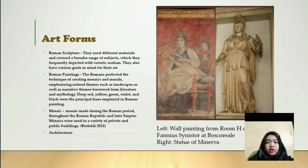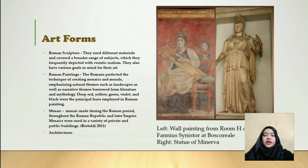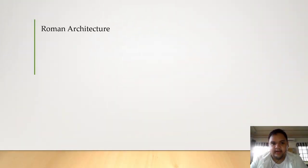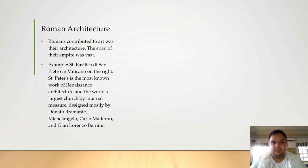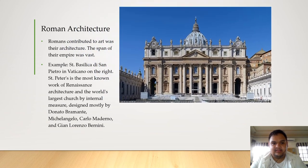The third art form is the mosaic. Mosaics were made during the Roman period. Throughout the Roman Republic and later Empire, mosaics were used in a variety of private and public buildings. Mosaics were often used as floor and wall decorations and were particularly popular in the Roman world. The last art form is architecture.